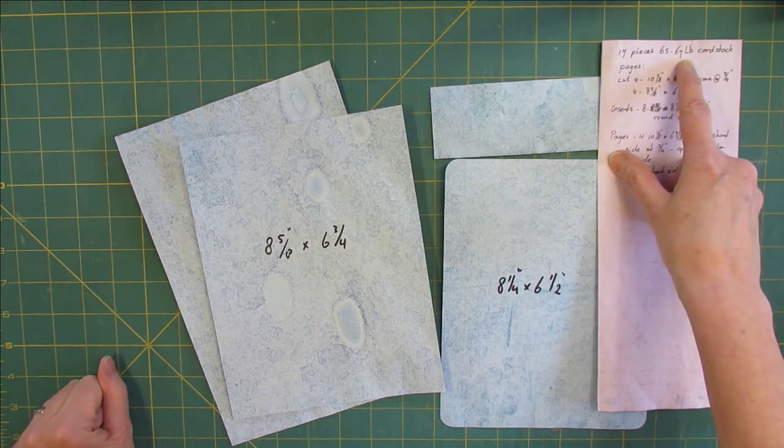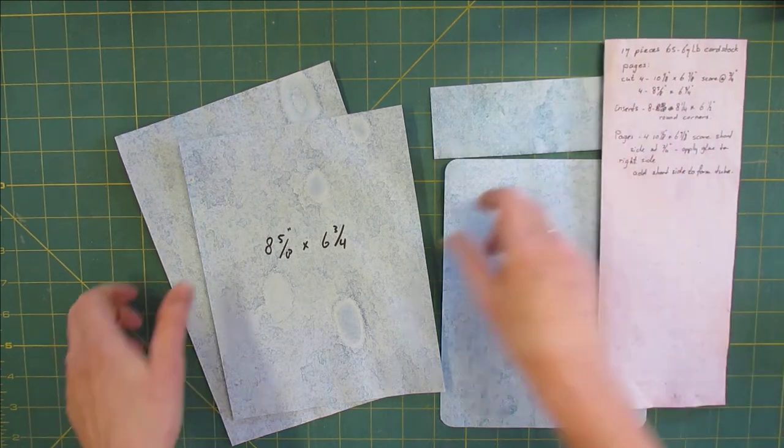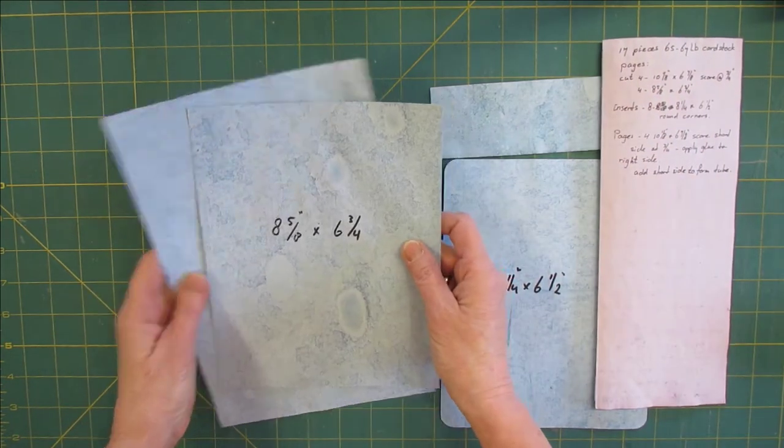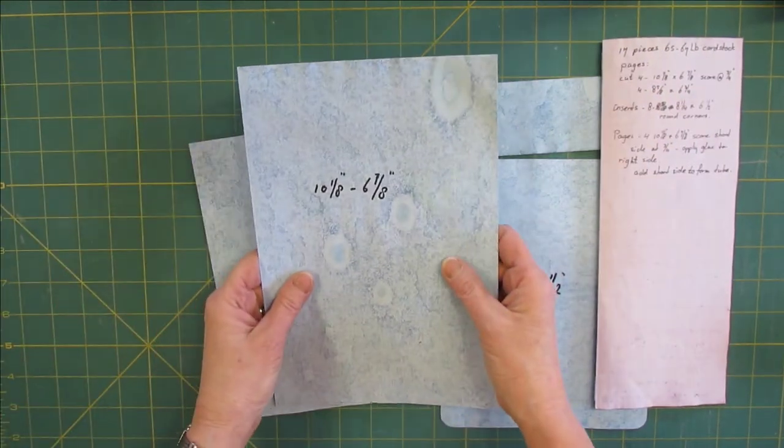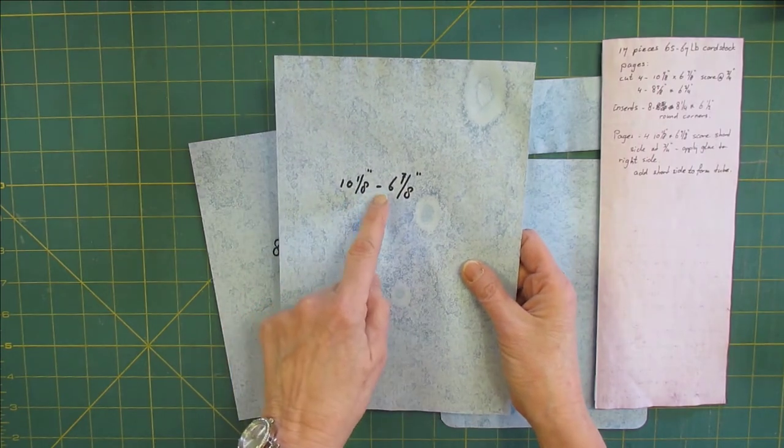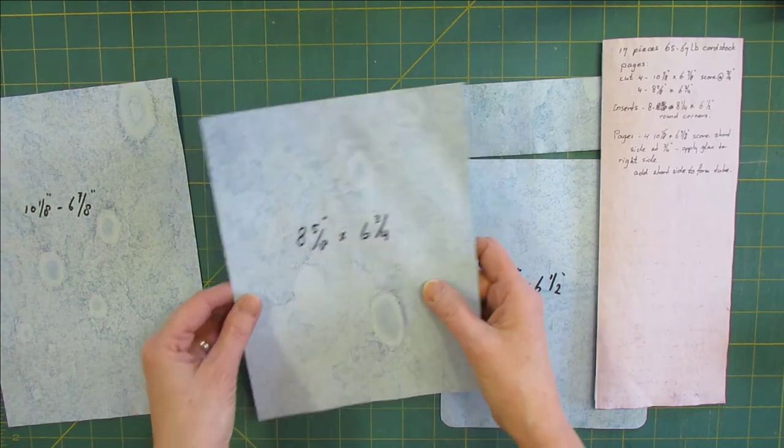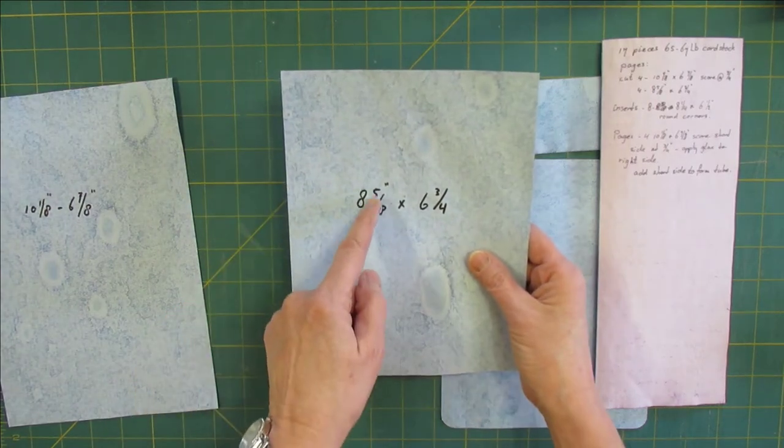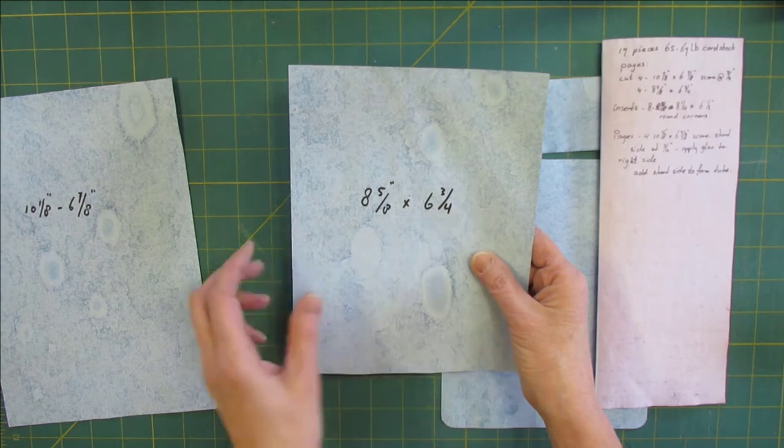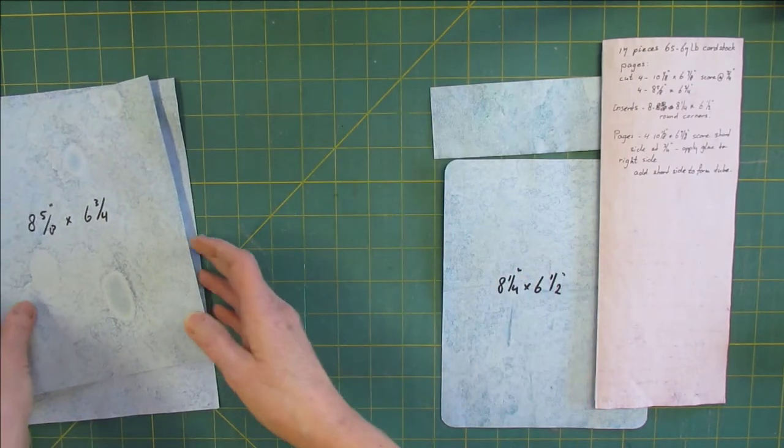For the pages we're going to cut four 10 1/8 by 6 7/8 and we're going to cut four 8 5/8 by 6 3/4. These are for the pages.